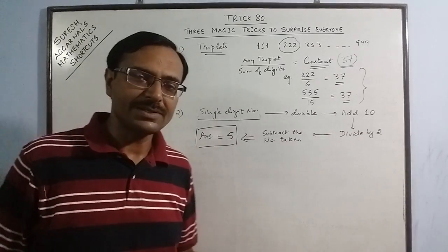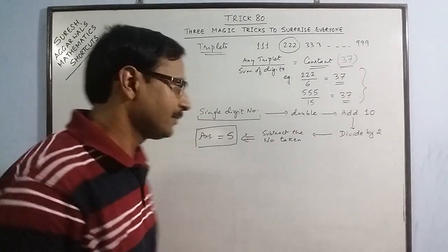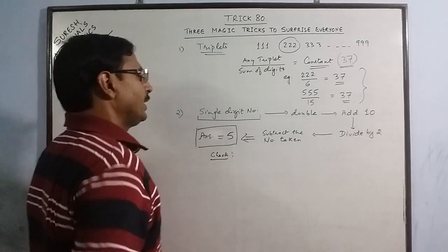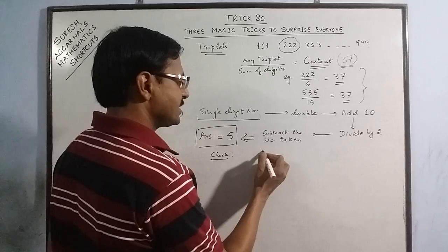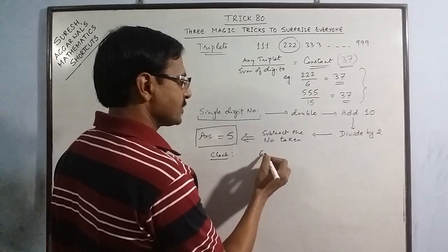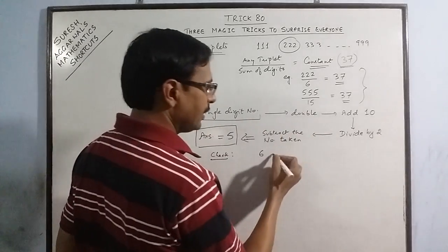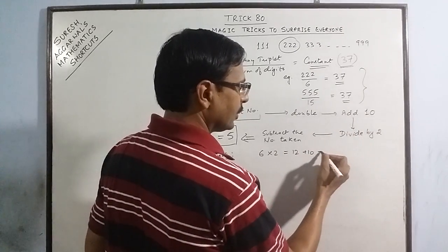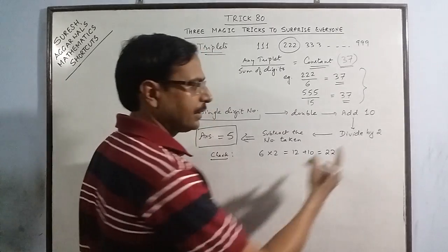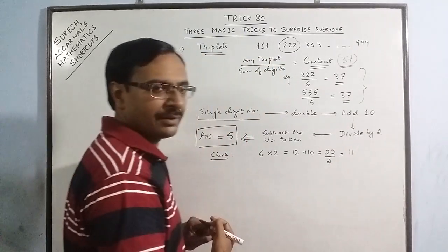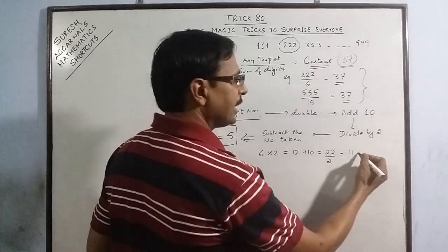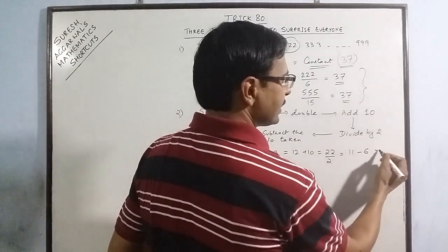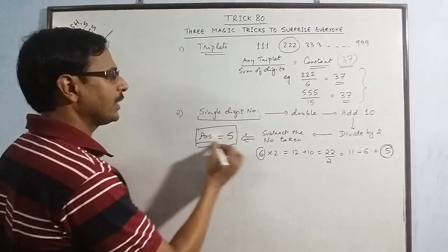Yes, even if he selects 1, 2, 3, 4, 5 or any number—any single digit number—and carries on this process, he will get the answer as 5. Let us check this. Now we are doing the checking part. Take the number as 6. Now 6, double: 12. Add 10: 22. Divide by 2: 11. Subtract the number taken—the number taken was 6—so the answer is 5. This is what we get.